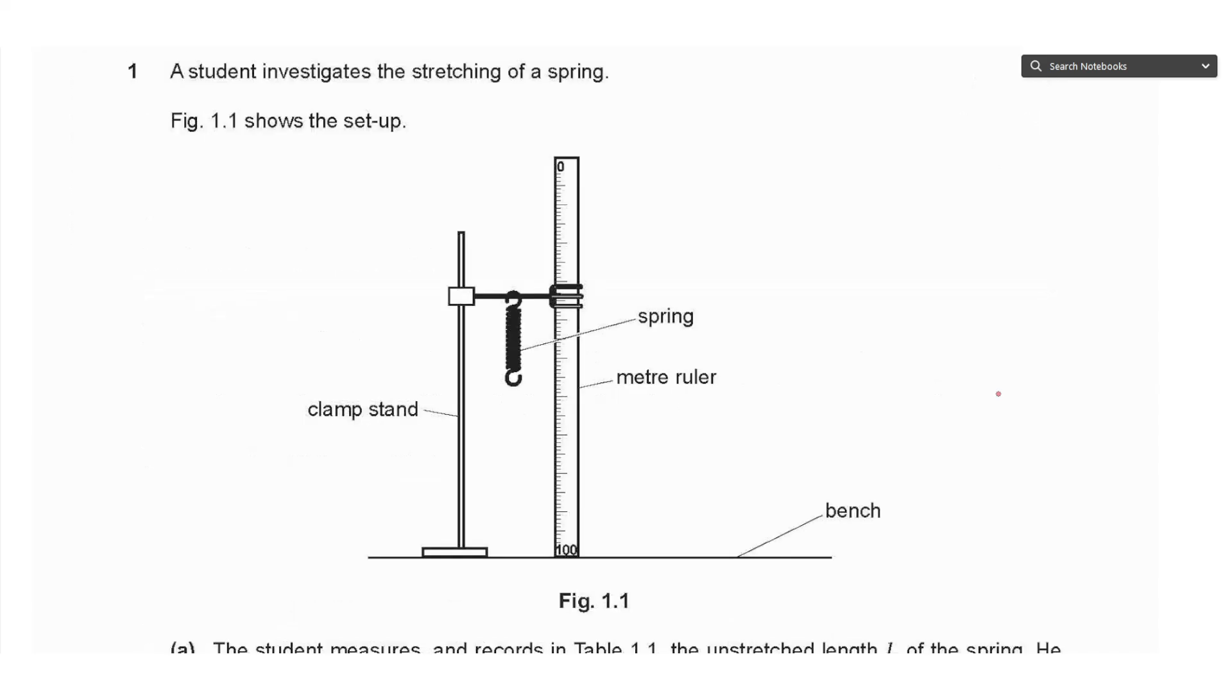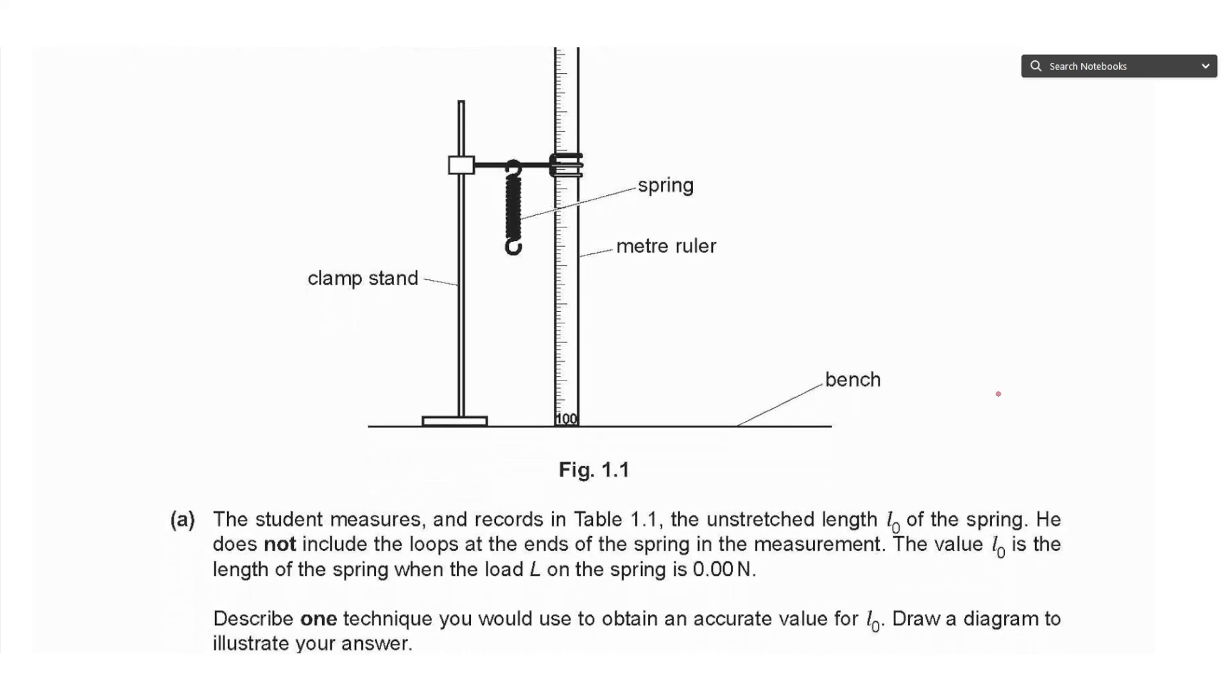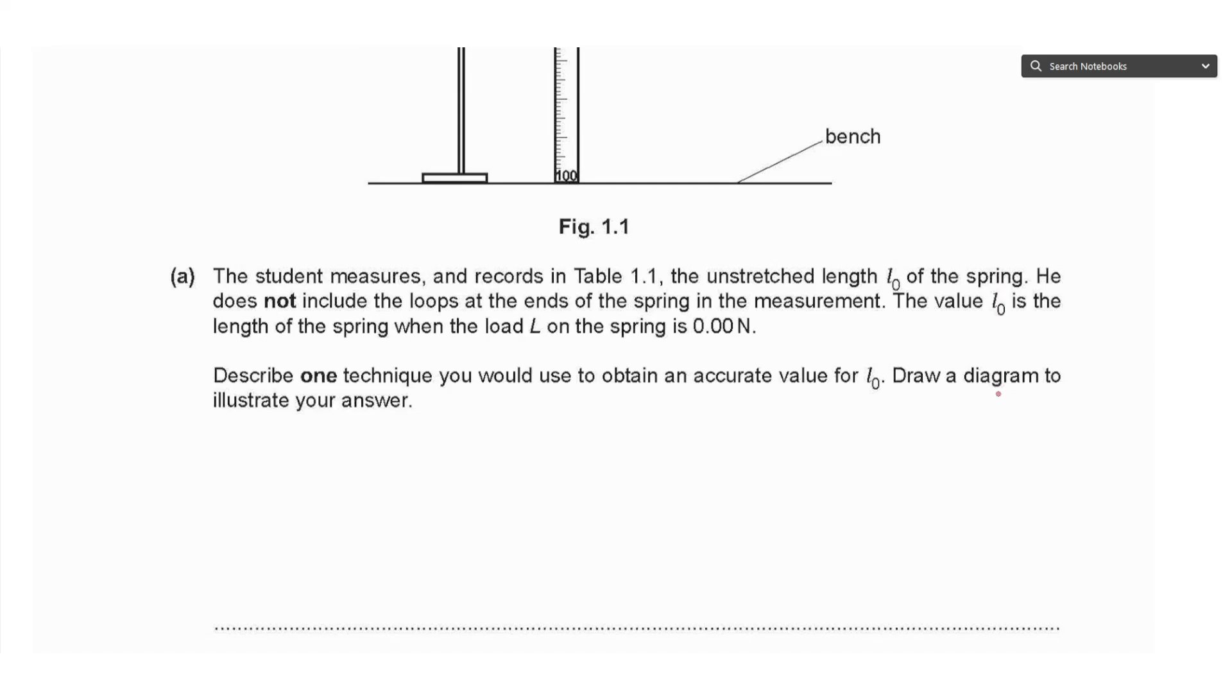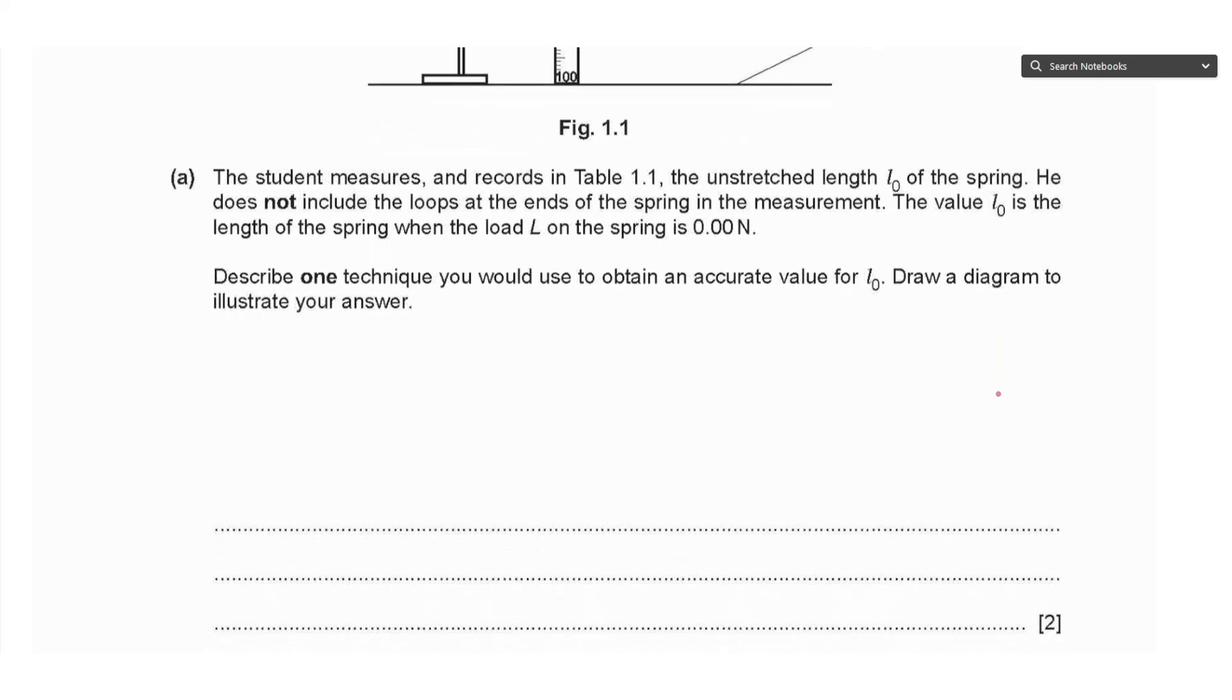Question 1 says a student investigates the stretching of a spring. Figure 1.1 shows the setup—we have a spring hanging from a clamp and the ruler standing vertically. Part A says the student measures and records in Table 1.1 the unstretched length L₀ of the spring. He does not include the loops at the ends of the spring in the measurement. The value L₀ is the length of the spring when the load L on the spring is 0.00 Newtons.